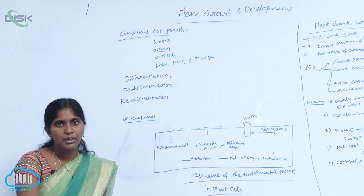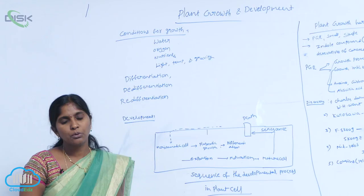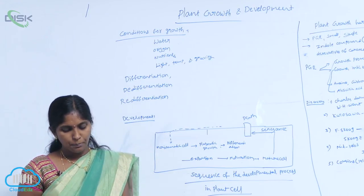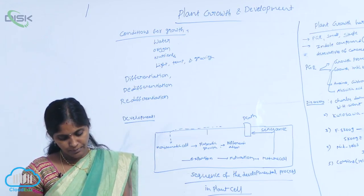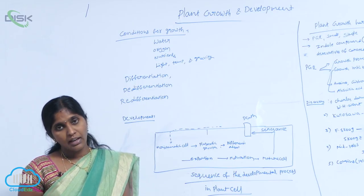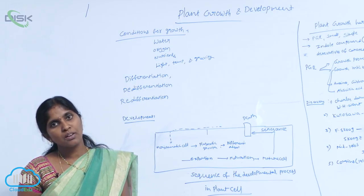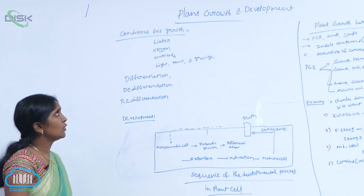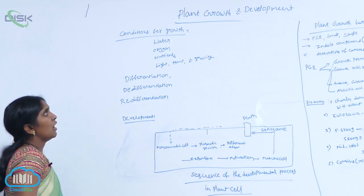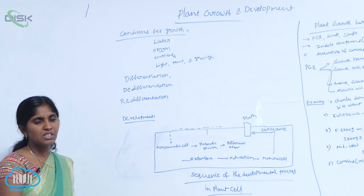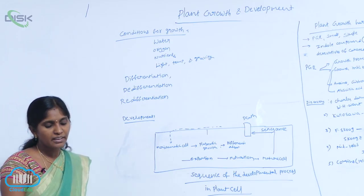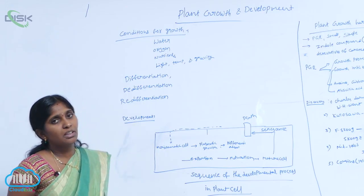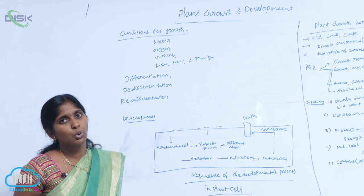The nutrients — micro and macro nutrients — are needed for synthesis of protoplasm and they also act as a source of energy. Along with those, light, temperature, and gravity also show an impact on growth.